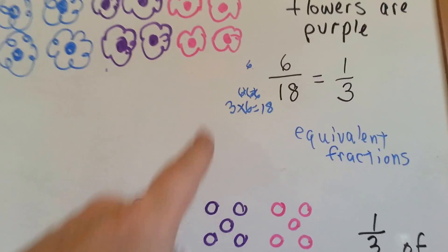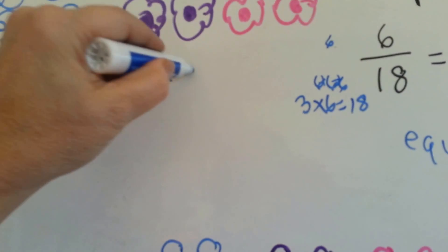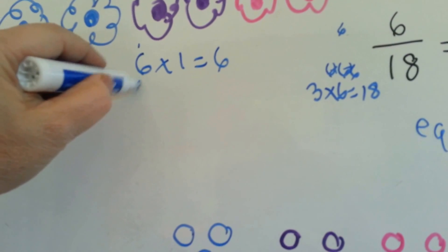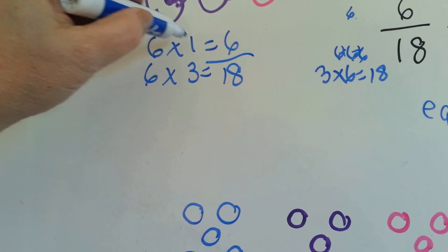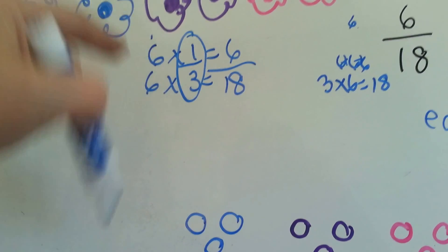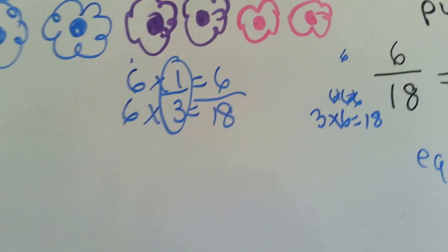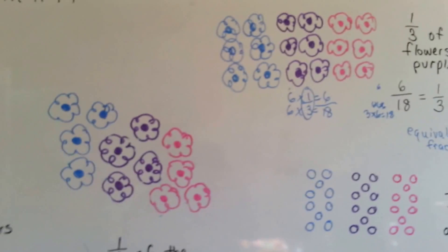And we can do it again to the six-eighteenths. I started doing it right here. Six times one equals six. Six times three equals eighteen. Look it, here's the one-third. So these are equivalent fractions.